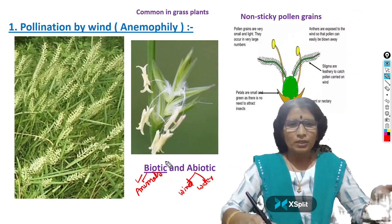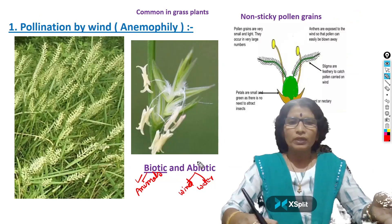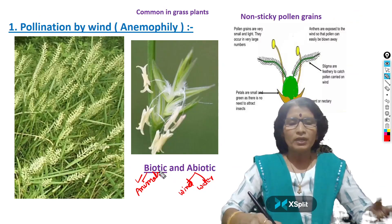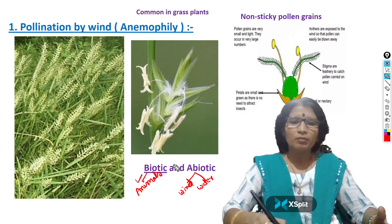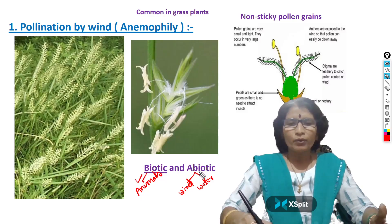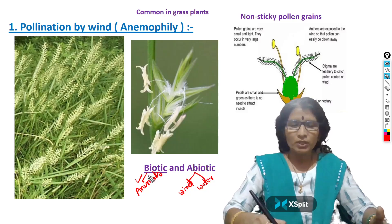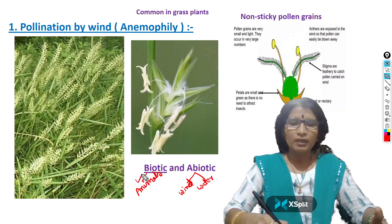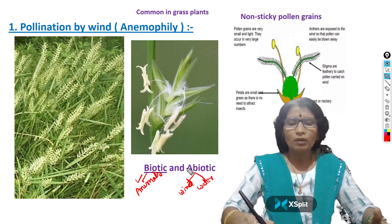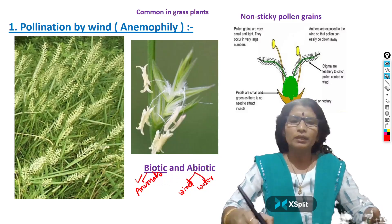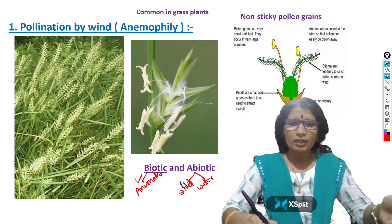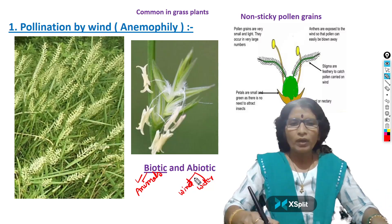Pollinating agents are of two types: biotic and abiotic. Biotic means pollination takes place by the activity of animals, and abiotic means pollination takes place by the activity of wind or water. In the majority of plants, pollination takes place by animals. When we come to abiotic, the majority of plants get pollinated by wind.